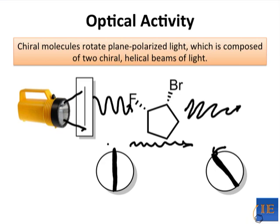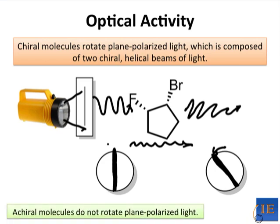Achiral molecules do not rotate plane-polarized light. This is important to keep in mind. It's also important to keep in mind that if you have a mixture of equal parts of two enantiomers, they will also appear not to rotate light because half of the molecules will rotate it in one direction and the other half will rotate it in the other direction for a net effect of no rotation overall.